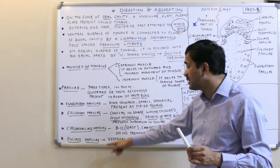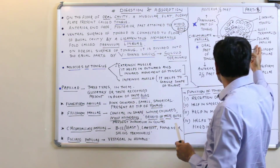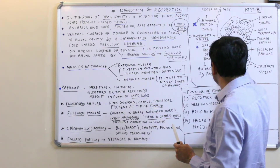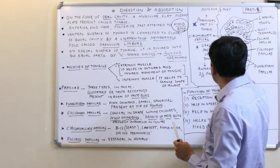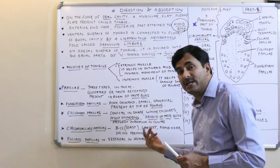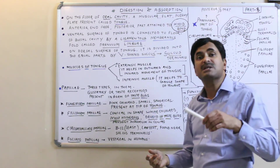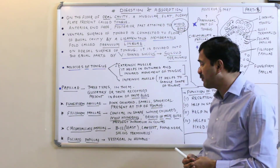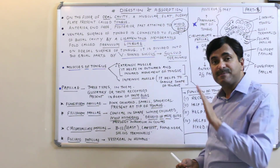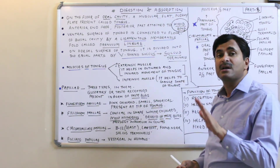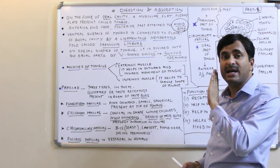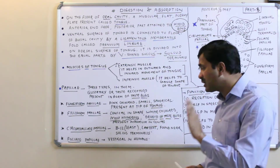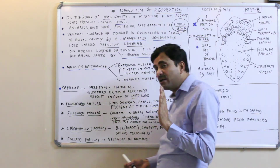The last type of papilla, shown on the posterior sides of the tongue, is called the foliate papilla, meaning leaf-like papilla. However, foliate papillas are absent in human beings, or we can say they are vestigial in human beings and do not have any particular function.